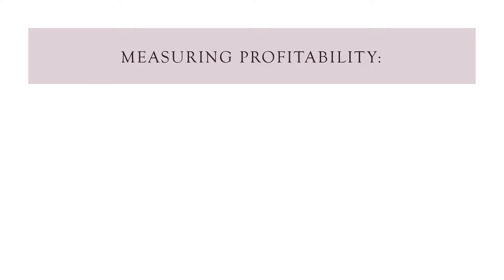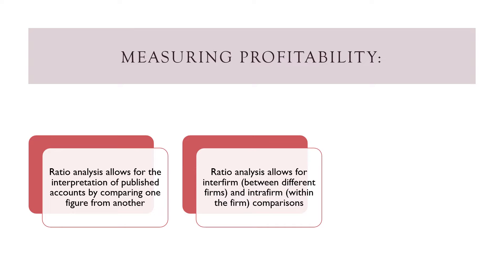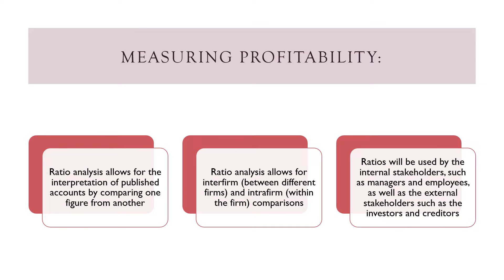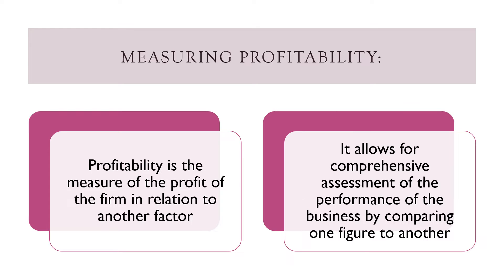So measuring profitability. Ratio analysis allows for the interpretation of published accounts by comparing one figure from another. Ratio analysis allows for inter-firm, so between different firms, and intra-firm, within the firm, comparisons. Ratio analysis will be used by internal stakeholders, such as managers and employees, as well as external stakeholders, such as investors and creditors. Profitability is the measure of the profit of the firm in relation to another factor. It allows for a comprehensive assessment of the performance of the business by comparing one figure to another.